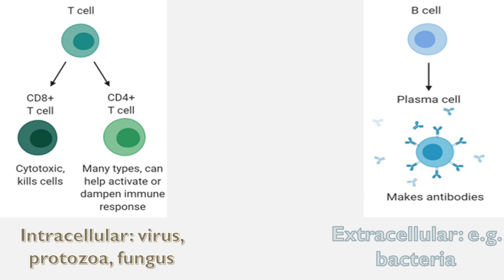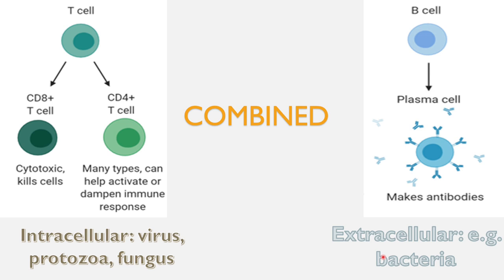Infected cells may contain an intracellular pathogen — your own cells may be infected with a virus, protozoa, intracellular bacteria, or fungi. So someone with a T cell deficiency wouldn't be able to get rid of viruses or protozoa, and will have predominantly intracellular infections. People with B cell deficiency syndromes will mainly have a problem attacking extracellular organisms like bacteria. There are also combined immunodeficiencies where someone has both a B and T cell defect, so they will have infections with bacteria, viruses, protozoa — everything.